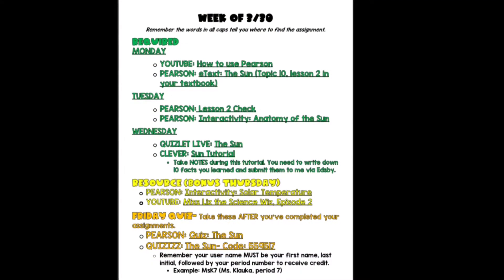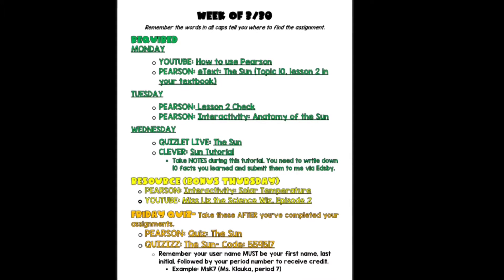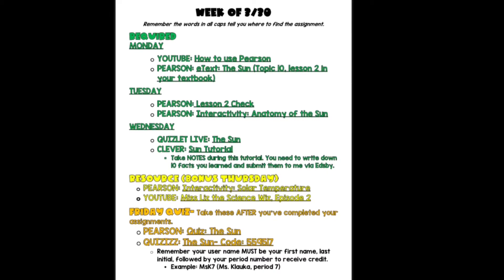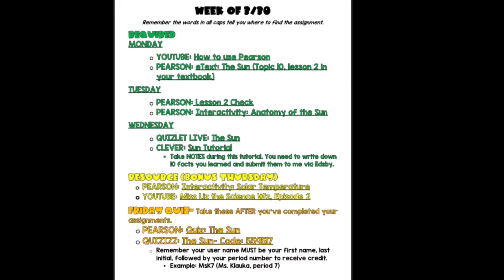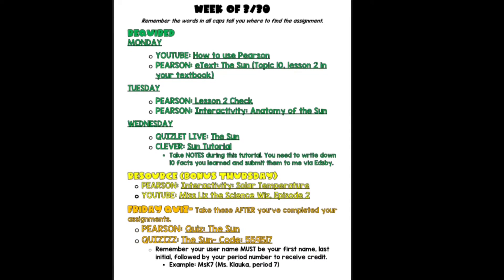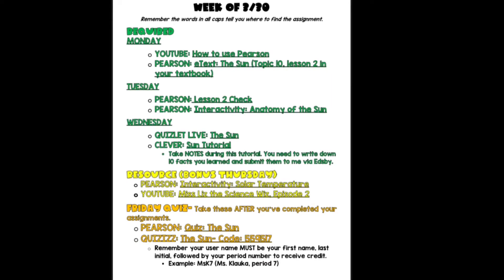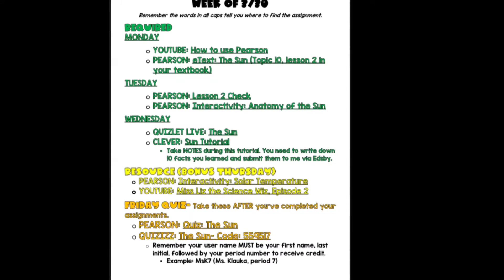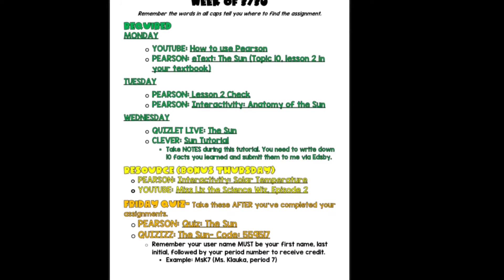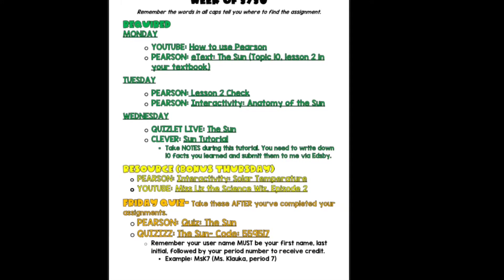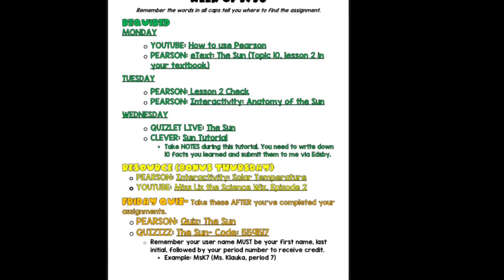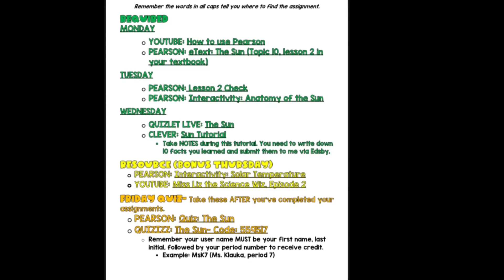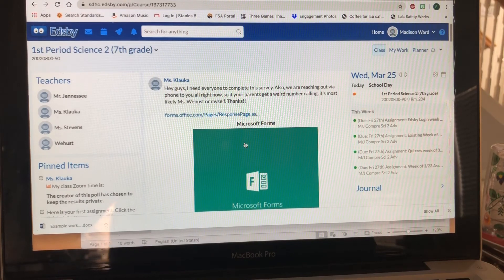Every week on Edsby you will have an agenda uploaded. On that agenda it will have day-by-day what you should be working on. The part in green says 'required' — anything in the green section you have to complete. I pace it out for you, but you don't have to follow it exactly. The yellow section says 'resource,' meaning it will help you but is not required — I suggest doing that on Thursday. Then on Friday it says 'quiz,' so you'll access and take the quiz on Friday. Quizzes will not open until Thursday.